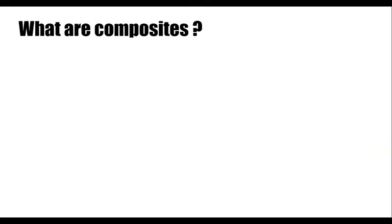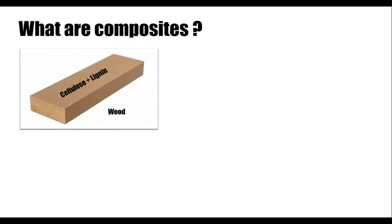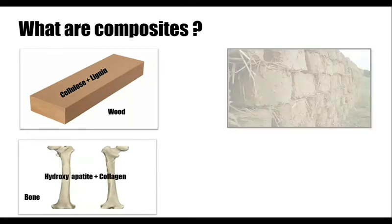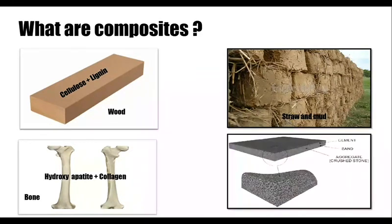What are composites? If you see the example of wood, wood is a composite material which contains cellulose fibers and lignin. Bone is also a composite material which contains hydroxyapatite and collagen. A hut is a composite material which contains straw, mud, rice husk, dung, etc. Reinforced concrete is also a composite material which contains cement, sand, gravels, etc.